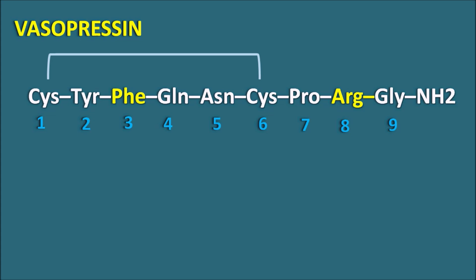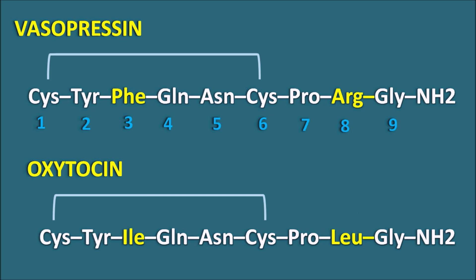We have another hormone released from the posterior pituitary, that is oxytocin. Oxytocin has a similar amino acid sequence to vasopressin, and both are nonapeptides. They differ mainly at the eighth position and the third position. In vasopressin, the eighth position has arginine and the third position has phenylalanine, whereas in oxytocin the eighth position has leucine and the third position has isoleucine. Apart from these two amino acids, the remaining sequence is the same. However, this change in two amino acids is sufficient to produce a difference in functionality — vasopressin acts as an anti-diuretic hormone whereas oxytocin acts as a uterine stimulant.